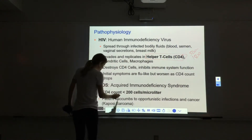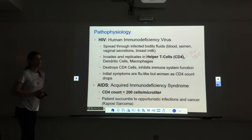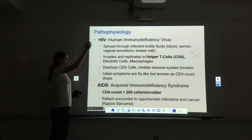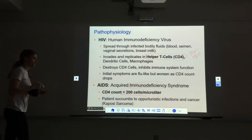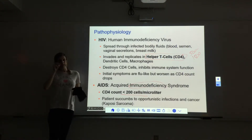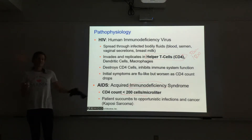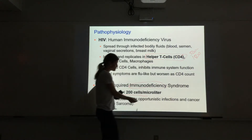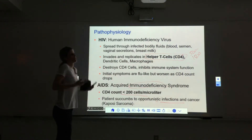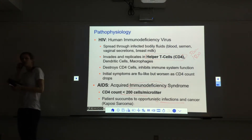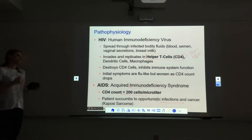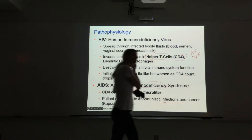If the CD4 count drops below 200 cells, then we say that the person has AIDS — acquired immunodeficiency syndrome. The immune system is severely deficient once it's progressed to AIDS. You don't actually die from AIDS itself; AIDS completely destroys your immune system so it can't protect you against anything. You end up dying because of some sort of opportunistic infection or cancer, like Kaposi's sarcoma, which is much more common in AIDS patients.